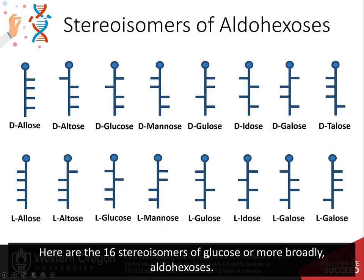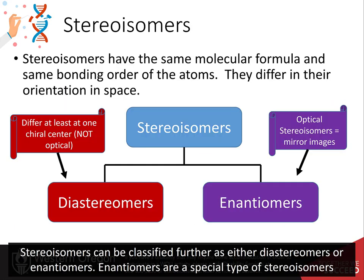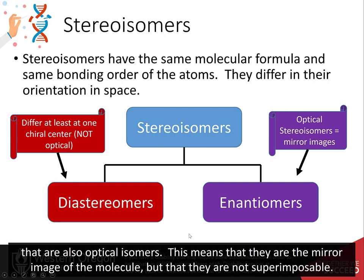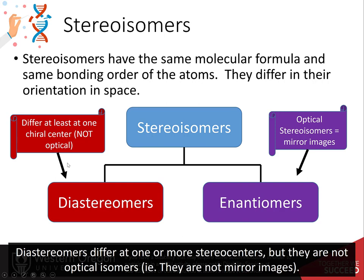Here are the 16 stereoisomers of glucose, or more broadly, aldohexoses. Stereoisomers can be classified further as either diastereomers or enantiomers. Enantiomers are a special type of stereoisomer that are also optical isomers — they are the mirror image of the molecule, but not superimposable. Diastereomers differ at one or more stereocenters, but they are not optical isomers, meaning they are not mirror images.